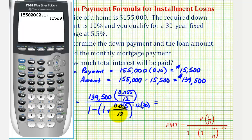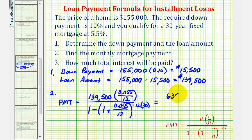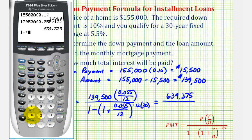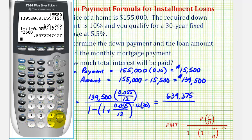Let's evaluate the numerator and denominator separately. For the numerator, we have 139,500 times 0.055 divided by 12, which gives us 639.375. For the denominator, we have 1 minus the quantity (1 plus 0.055 divided by 12), raised to the power of negative 360. That gives us approximately 0.80722.